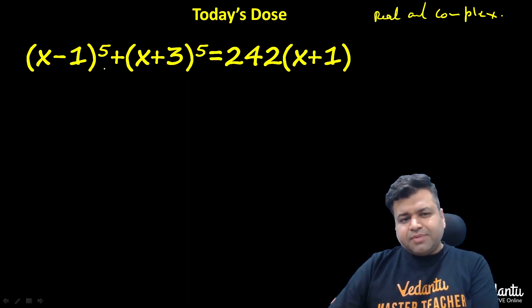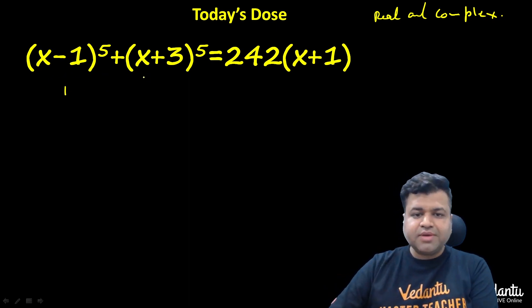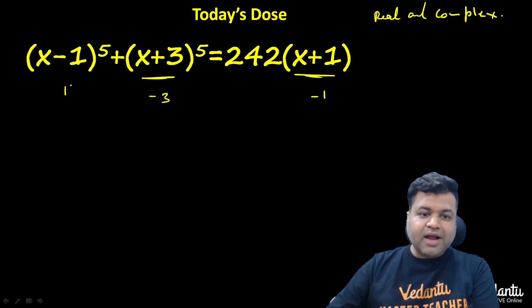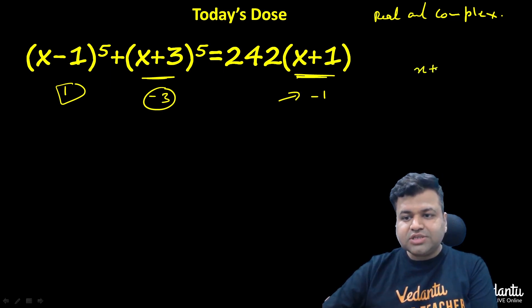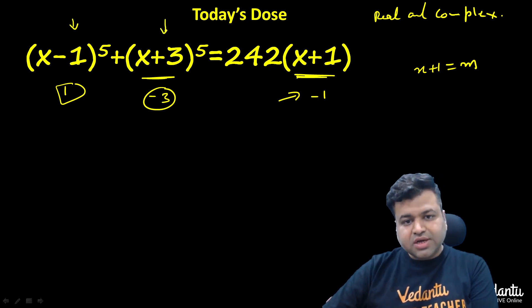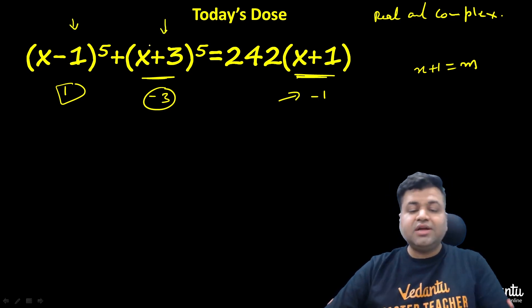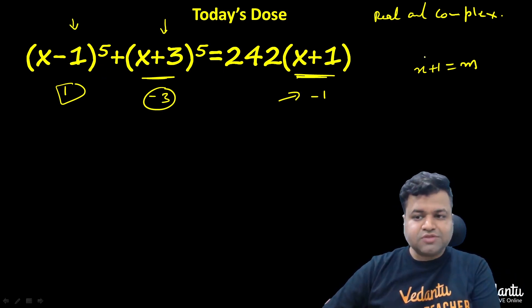If you make an observation here, x minus 1 is 0 at 1, this becomes 0 at minus 3, and this becomes 0 at minus 1. And the average of both is minus 1. That means if I consider the average value, let's assume x plus 1 equal to m. When we raise to power 5, many terms will cancel out.